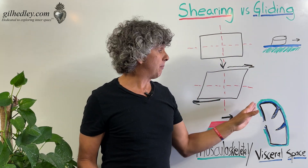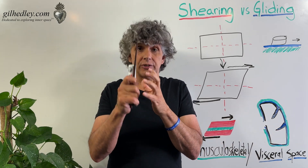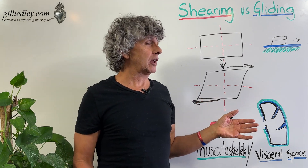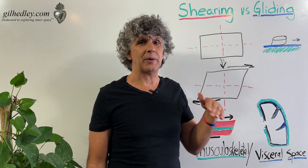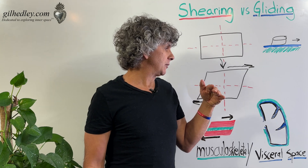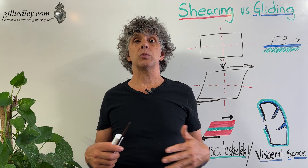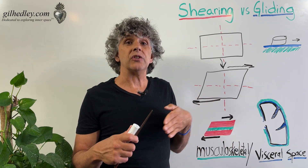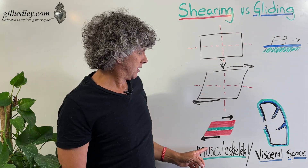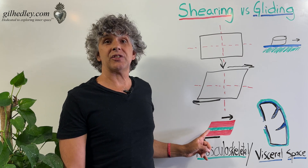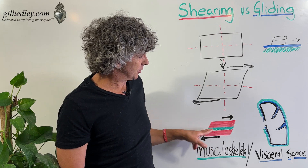The serous fluid produced by the membranes in the visceral spaces allows there to be true gliding and differential movement between the tissues without them being directly connected by a fascia. So we have the lung tissue, the serous fluid, and the wall of the space — the fluid is continuous and yet allows true gliding, whereas the musculoskeletal tissues permit shearing rather than gliding because of the continuity of the connective tissue between the things that are having differential movement.